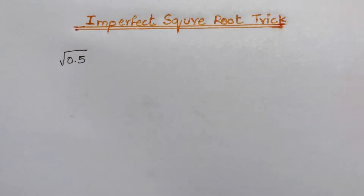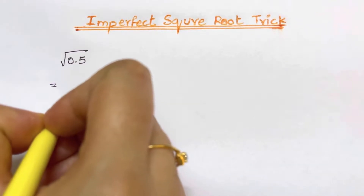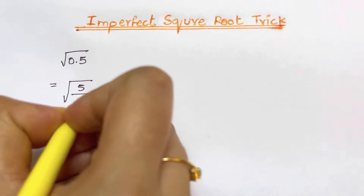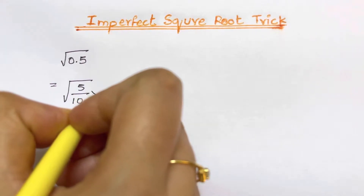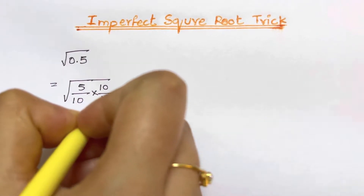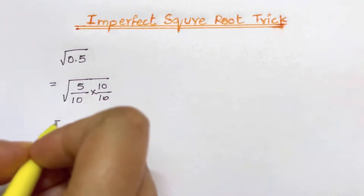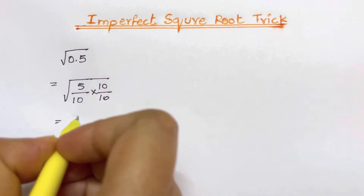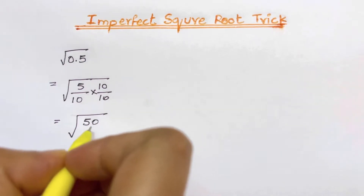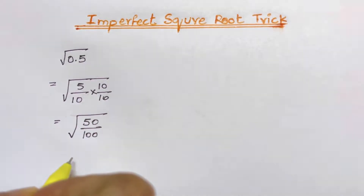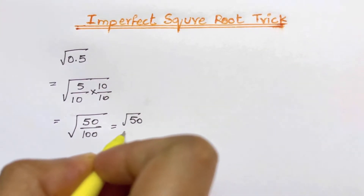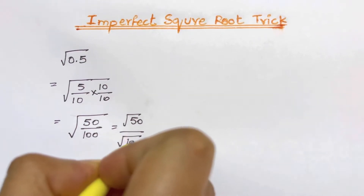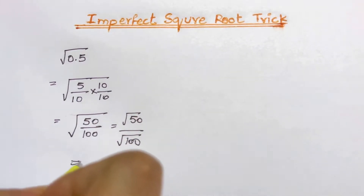Square root of 0.5 can be written as the square root of 5 divided by 10. To simplify, I can multiply and divide by 10 to make the denominator 100, so I'll have square root of 50 over 100. This can be written as square root of 50 divided by square root of 100, and square root of 100 is just 10.